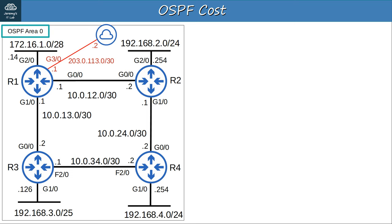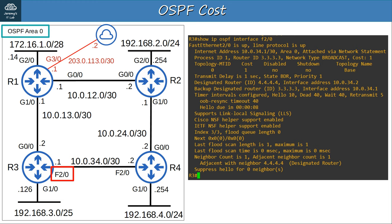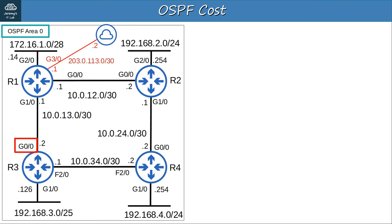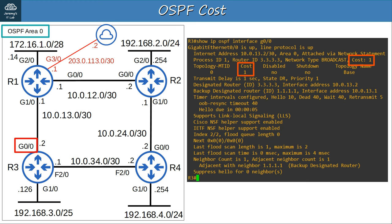Here is the same network topology as before. Let's check out the cost of R3's F2/0 interface using the SHOW IP OSPF INTERFACE F2/0 command. The cost is displayed in two places. As I said, the default cost of a fast Ethernet interface is 1, because it has a speed of 100 megabits per second and the reference bandwidth is 100 megabits per second by default. Now let's check the default OSPF cost on R3's G0/0 interface — the cost is also 1. Clearly, the default situation is not ideal.